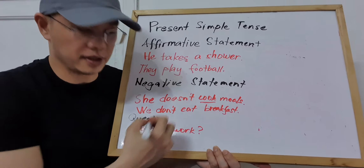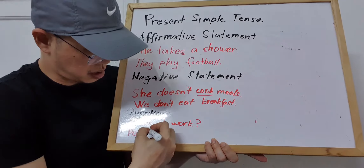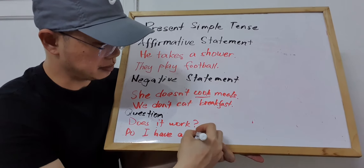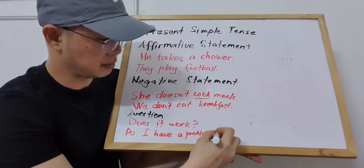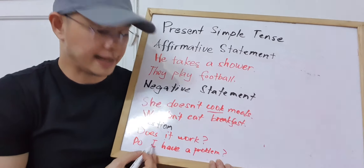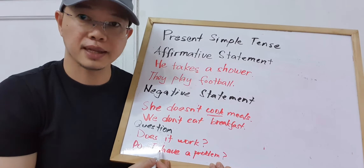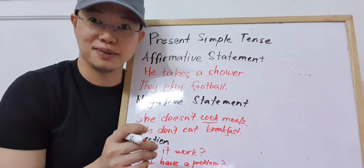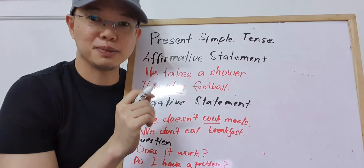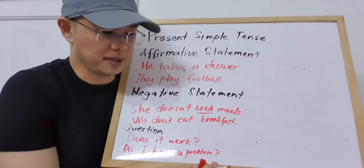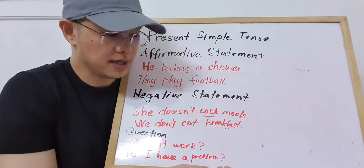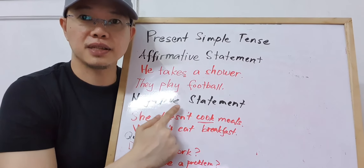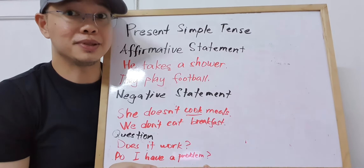Another example: 'Do I have a problem?' — 'do' because your subject is 'I,' and 'have' is in the base form. It's a strange question to ask yourself, but it can happen! So that's how you make affirmative statements, negative statements, and questions with Present Simple Tense.